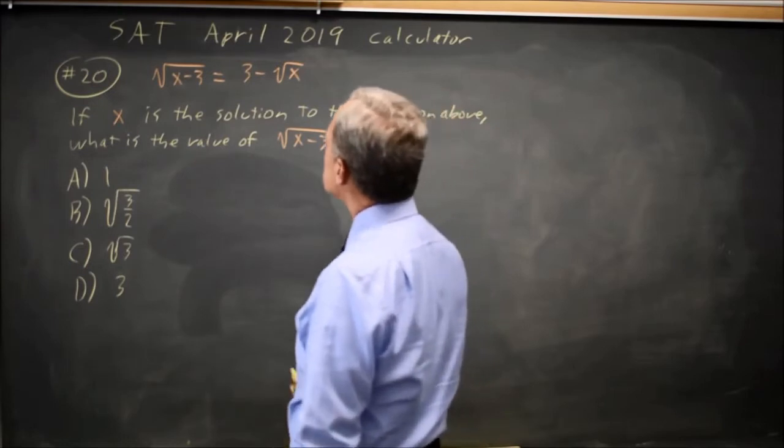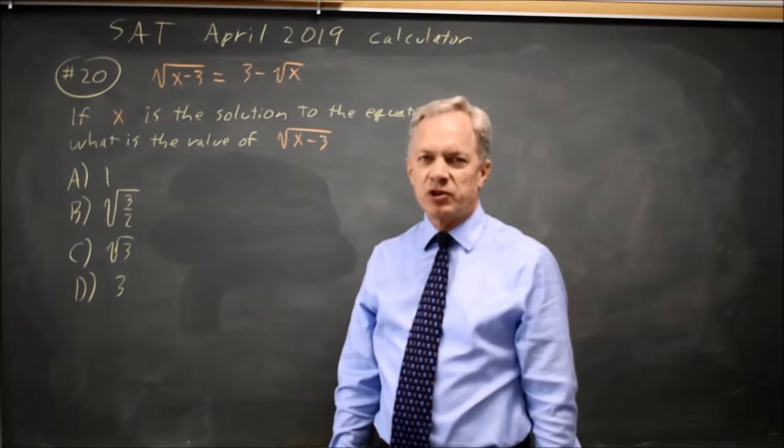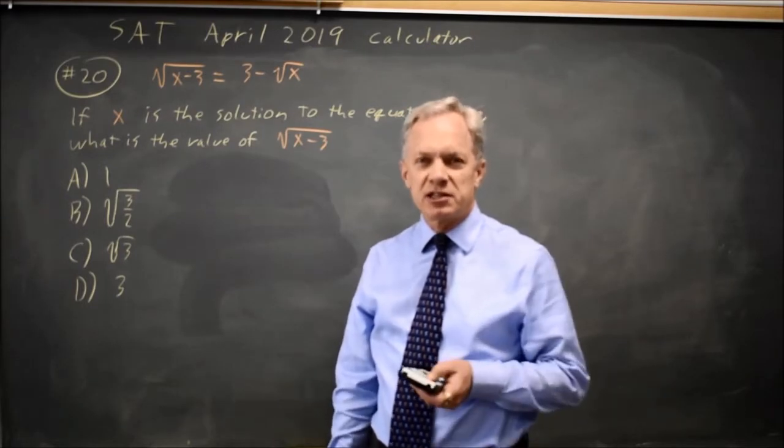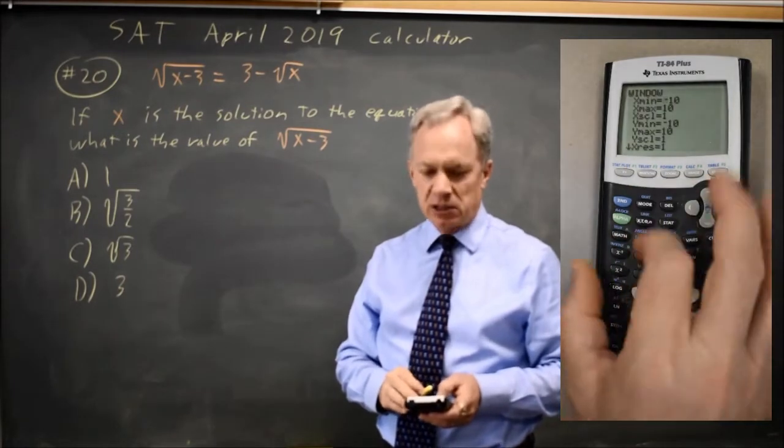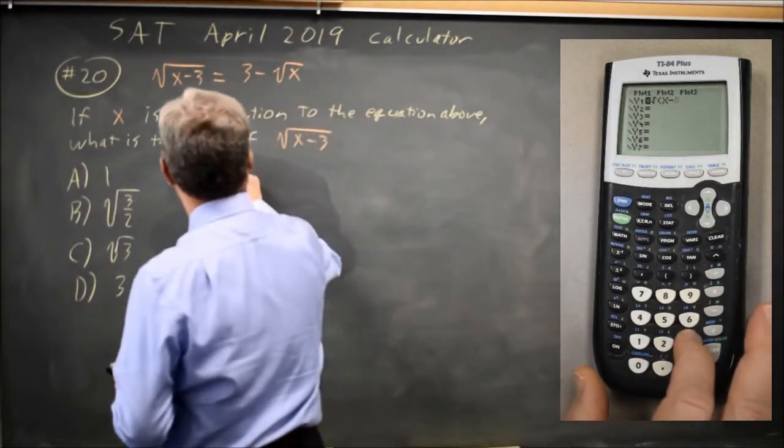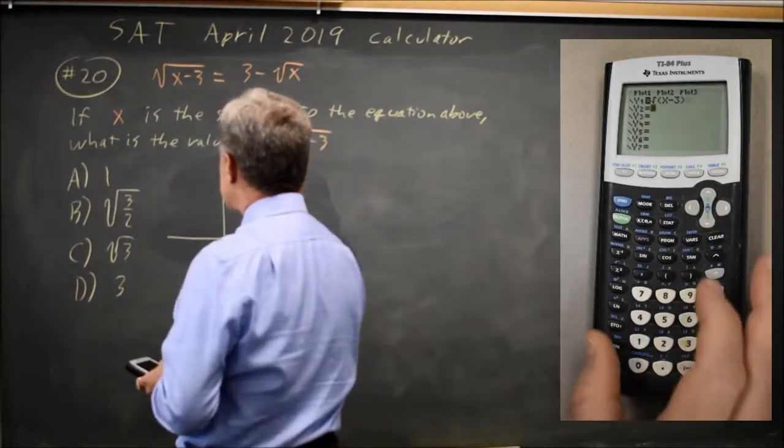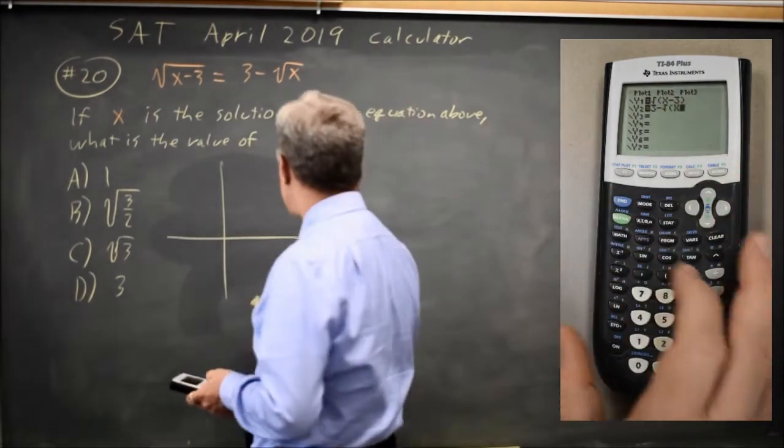So let's solve this the easy way. I can do it algebraically, and I will, but first I'm going to my graphing calculator because this is a calculator section. If I put the left side in y1, the right side in y2, and use zoom 6, the standard window, because I suspect from these answer choices that my x value will be in the standard window.